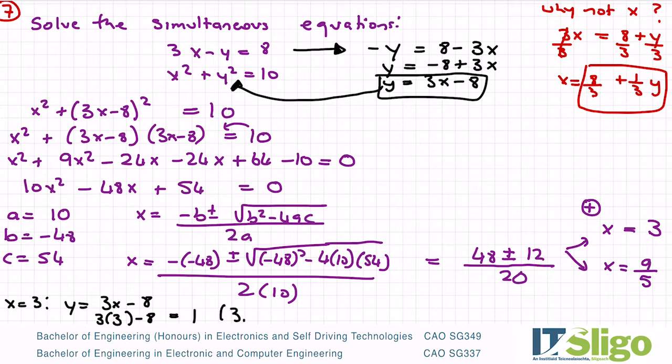Now when x was equal to 9 over 5, y is still equal to 3x minus 8, so it's equal to 3 times 9 over 5 minus 8. So let's do that: 3 bracket 9 over 5 close my bracket minus 8, and I'm getting minus 13 over 5.